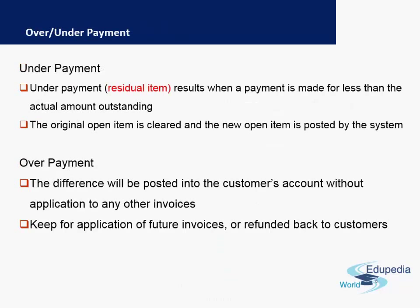Similar to vendor-related transactions, we can also have under or overpayments for customer transactions. Underpayment results when a payment is made for less than the actual outstanding amount — the original open item is cleared and a new open item is posted by the system. Overpayment is when the difference is posted to the customer's account without application to any other invoice; this is kept for future invoice application or, if not required, refunded back to the customer.